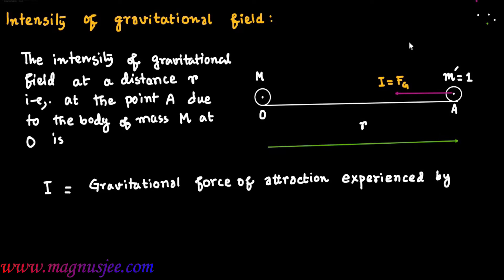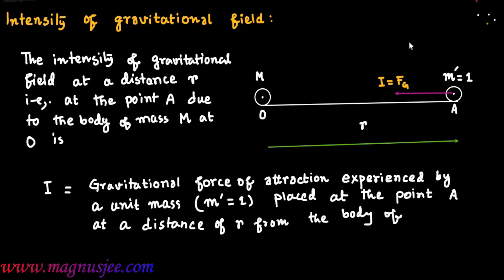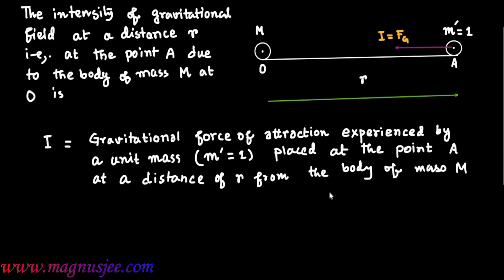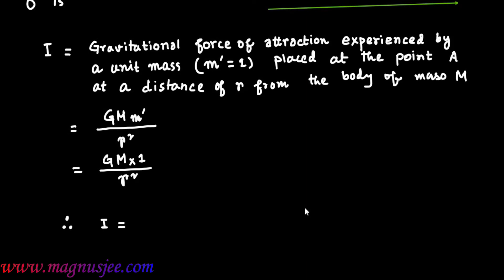I is the gravitational force of attraction experienced by a test body of unit mass, where M' equals 1, at point A, at a distance r from the body of mass capital M. Therefore, I = G·M·M' / R². Putting M' = 1, we get I = G·M·1 / R², therefore I = GM / R².